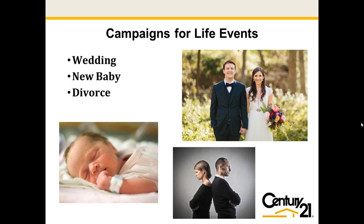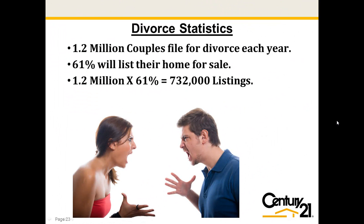Let's look at campaigns for life events we can use on Google or Facebook. Facebook knows that you're going to get a divorce around six months before you actually do, because they see what you're doing online. Life events: when somebody gets married, they're likely to buy a house; when someone has a new baby, they're likely to buy; when someone gets a divorce, they're likely to sell. 1.2 million couples file for divorce every year, and 61% will list their homes for sale — that's 732,000 potential listings. So we have to figure out how to target that audience.